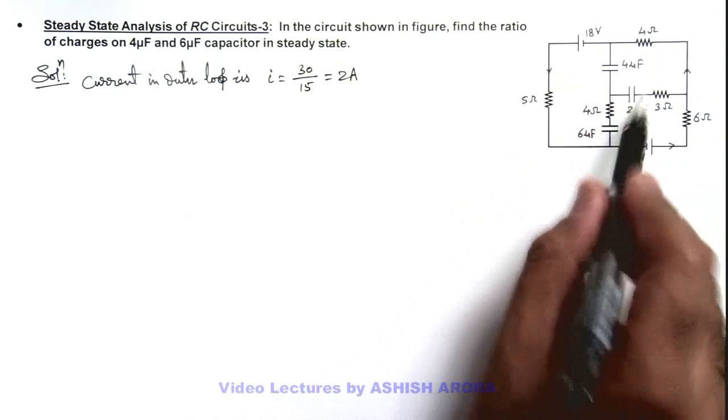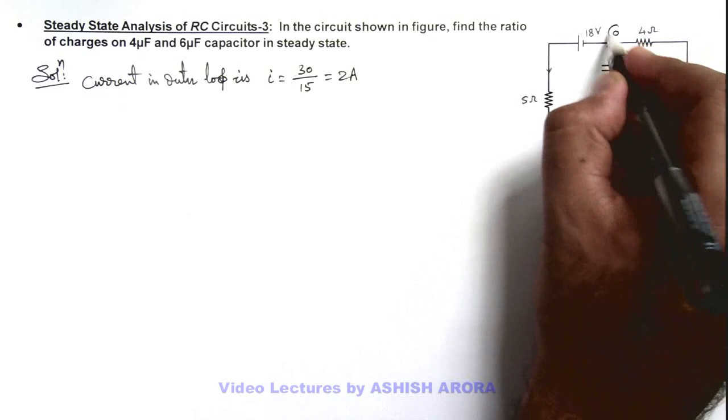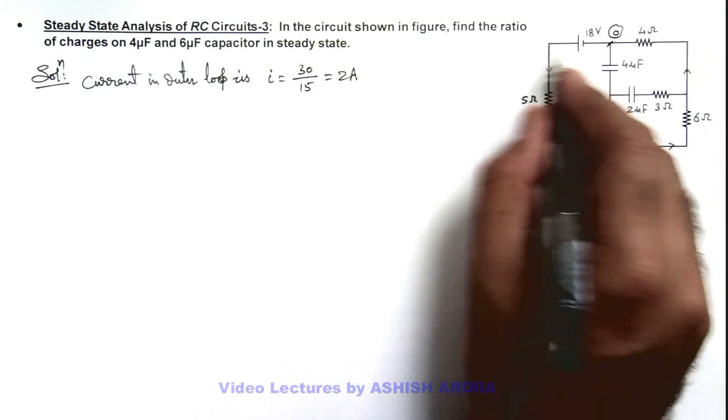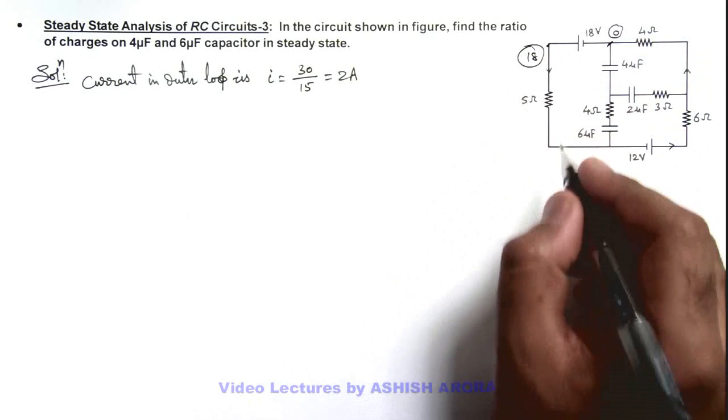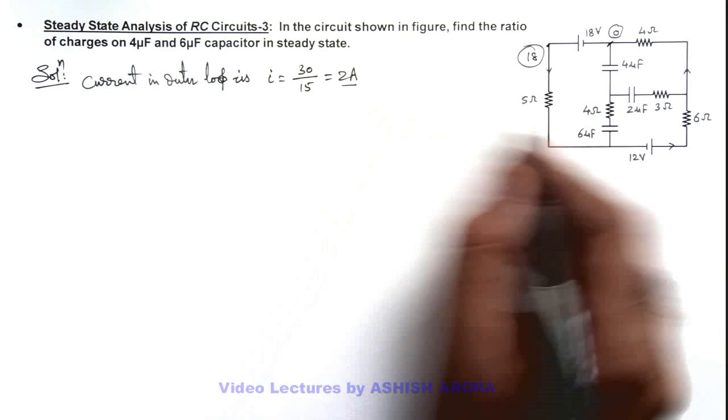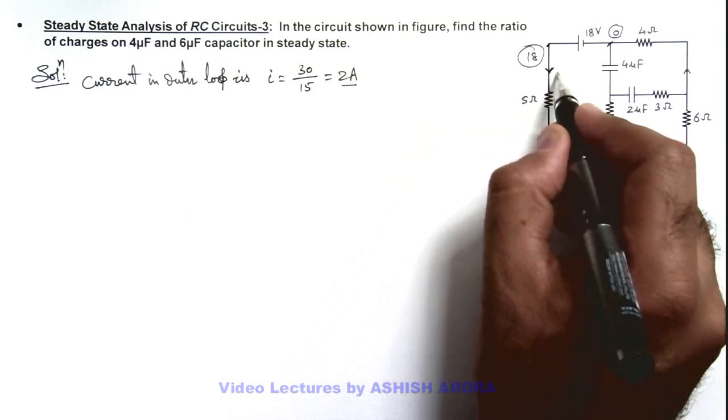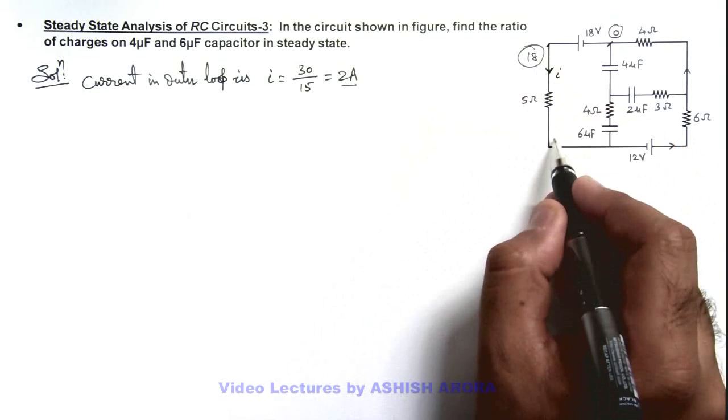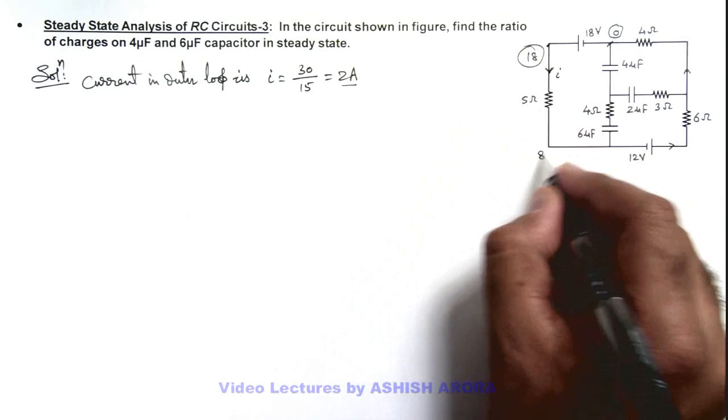Now to find out the charges on these capacitors we take at this point reference as zero volt. Then the potential on the other side of this battery would be 18. So here across this resistance the potential drop will be IR, that is 2 multiplied by 5, 10 ohms. So if current is flowing in this direction, here potential will decrease. So 18 minus 10 volts, and this will be 8 volts.